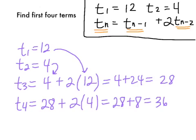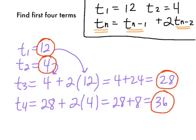So your first 4 terms here, about twice in a row now. t₁ is 12, t₂ is 4, t₃ is 28, and t₄ is 36.